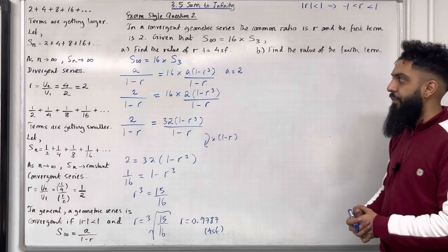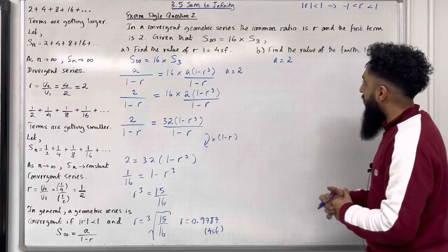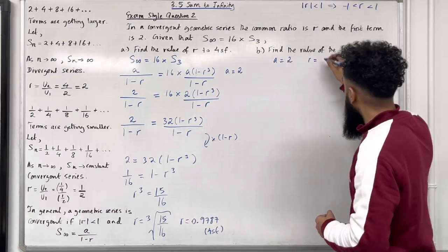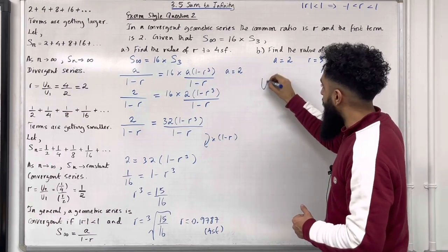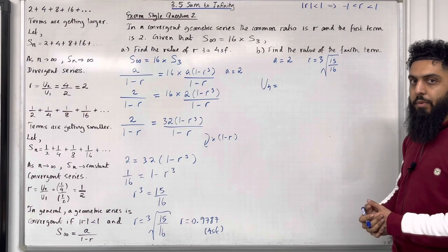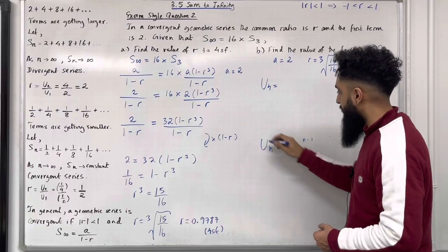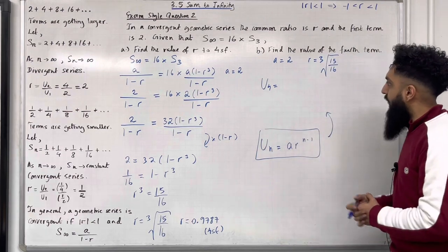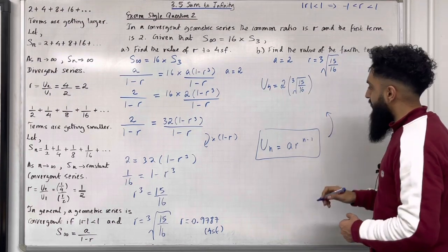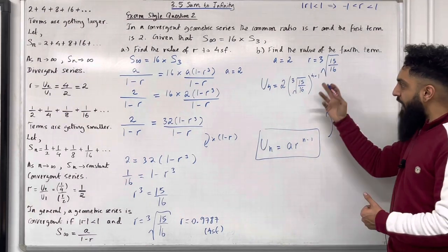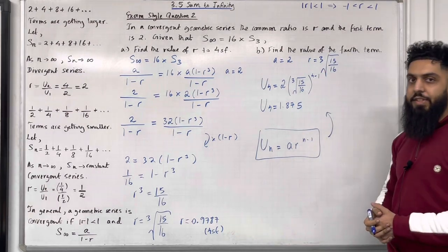That completes part A. In part B, find the value of the fourth term. We know the first term a is 2 and the common ratio r in exact form is ∛(15/16). Using the nth term formula for a geometric sequence, un = a·r^(n−1), we get u4 = 2 × (∛(15/16))³, which is 2 × (15/16) = 1.875. That is the fourth term.